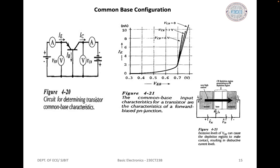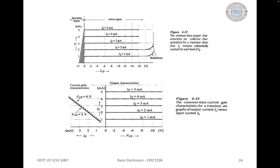For the common base output characteristics, IE is held constant at each of several fixed current levels, VCB is adjusted in convenient steps, and the corresponding values of IC are recorded. The IC and VCB levels obtained when IE is held constant at 1 mA are plotted; the resultant characteristic is identified as IE = 1 mA. Similarly, other characteristics are plotted for IE = 2 mA, 3 mA, and so on.